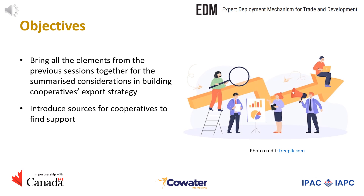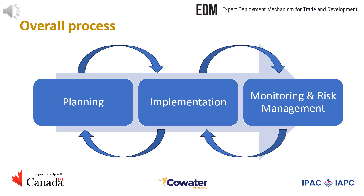We will also introduce sources for cooperatives to find support. There is a feedback loop in the development of an export strategy whereby cooperatives will continue to revisit the assumptions and actions throughout the planning, implementation and monitoring. For example, an event like the COVID-19 pandemic that appears during the implementation period will urge the cooperative to go back to their planning table to consider diversifying export markets, trade partners and logistics arrangements, as well as to assess the risk of delayed payment and contract termination.